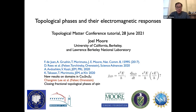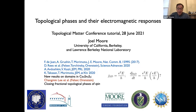The point of this talk is to give first of all a tutorial on one way of looking at topological phases which has the advantage that it leads very directly to thinking about how they respond to electromagnetic fields. The historical example of that is the quantum Hall effect, which you just heard about in the last talk, and is very useful for metrology aside from being a beautiful piece of physics.